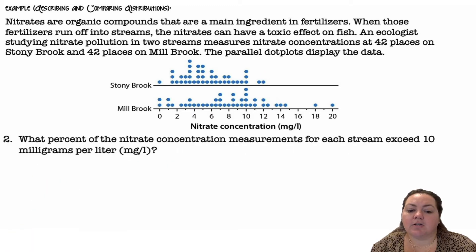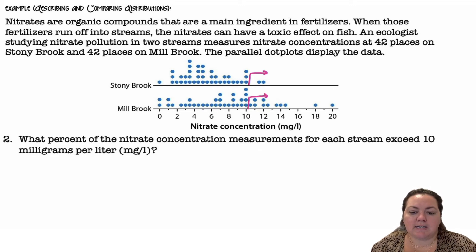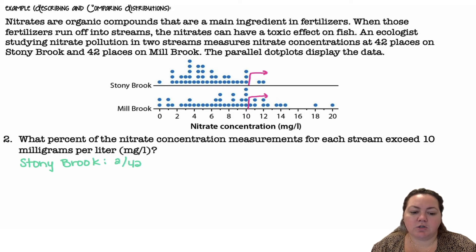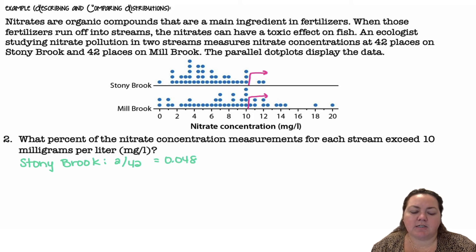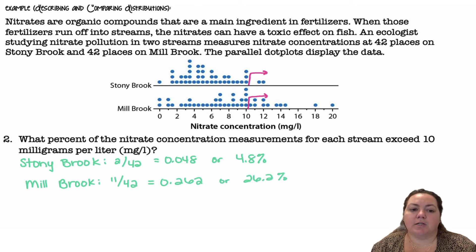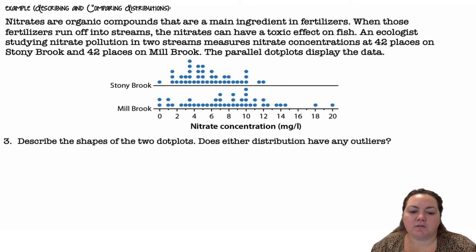What percent of nitrate concentration measurements from each stream exceed 10 milligrams per liter? Exceed 10 means more than 10. For Stony Brook, I had 2 out of the 42 total data points that were above 10, which is 4.8%. For Millbrook, I had 11 out of the 42, which is 26.2%.